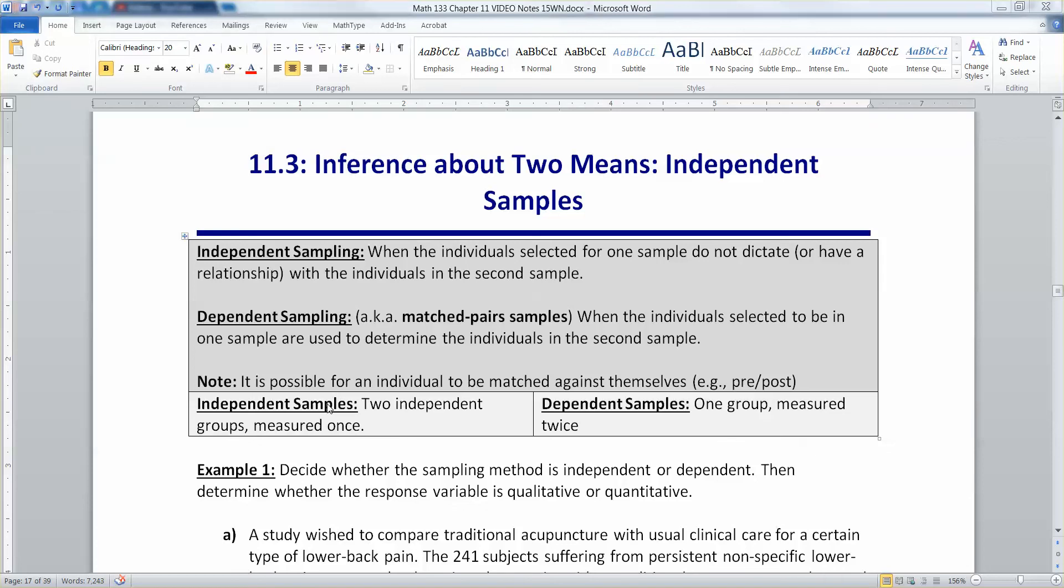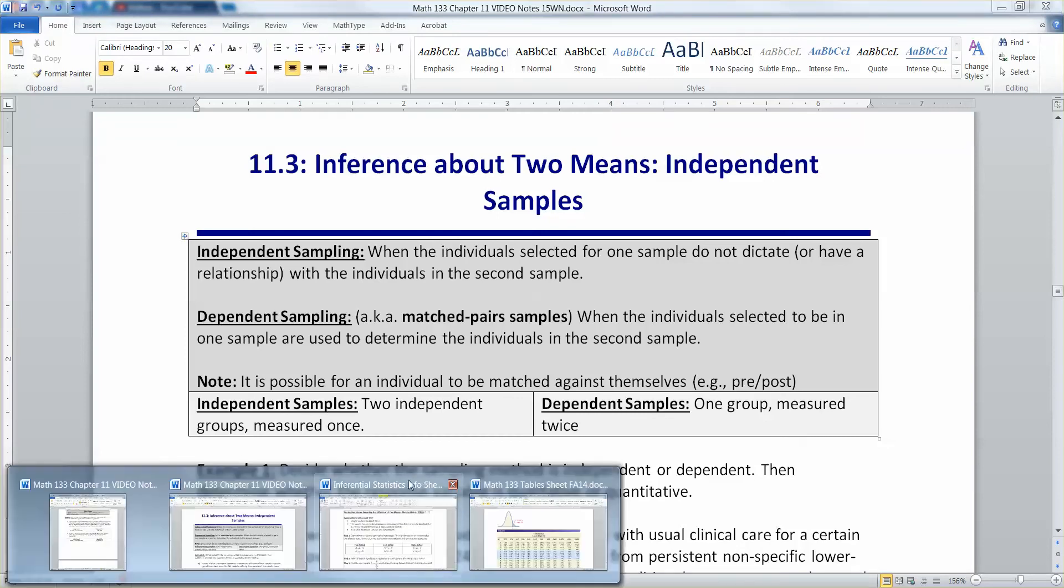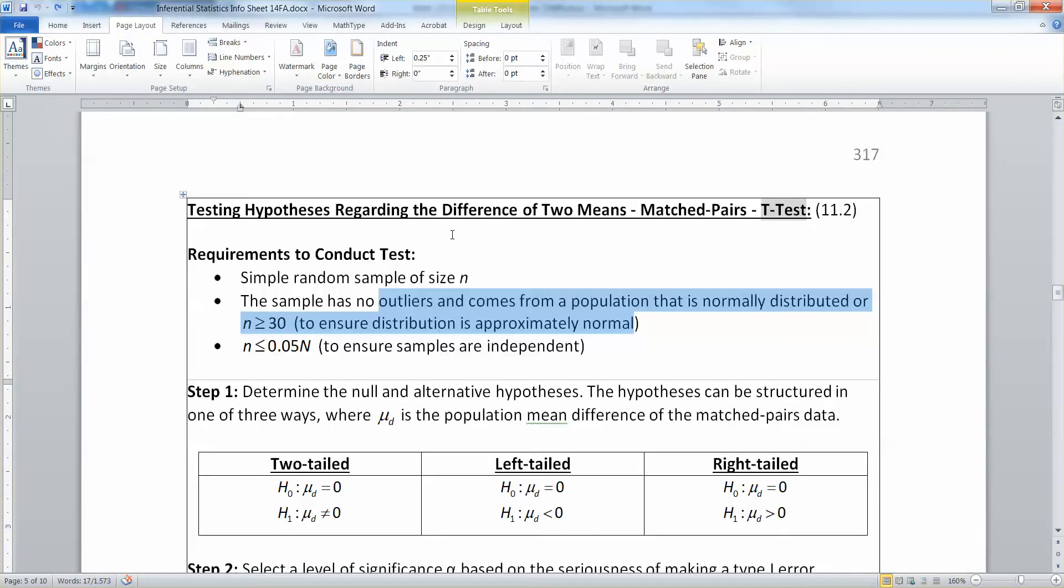In section 11.2, we were concerned about the difference of means but for dependent samples. In other words, the data sets were paired up. It was matched pairs data. So you take one minus the other - husbands and wives, pre-test and post-test, before Reiki touch therapy, after Reiki touch therapy. That's matched pairs, and that means you're doing that particular kind of t-test.